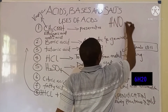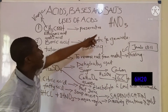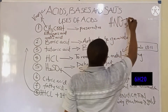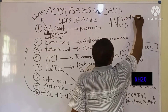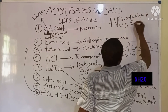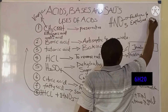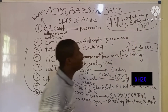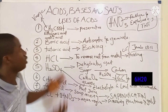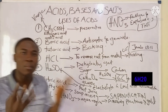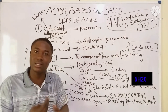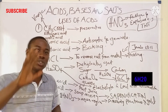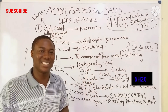HNO₃, called aqua fortis (the old name) or hydrogen trioxonitrate(V) acid, is used for making fertilizers and explosives, such as TNT which is called trinitrotoluene. So we have various acids and their uses. These are some common acids that normally appear in exam conditions. Do hit the subscribe button and share these videos with your friends. Thanks for watching.